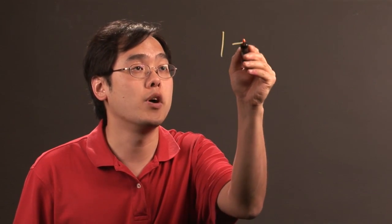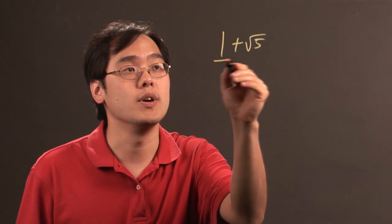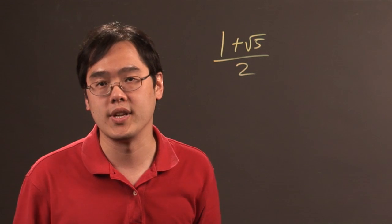Now the number itself is 1 plus square root of 5 over 2, a number that's very close to 1.62.